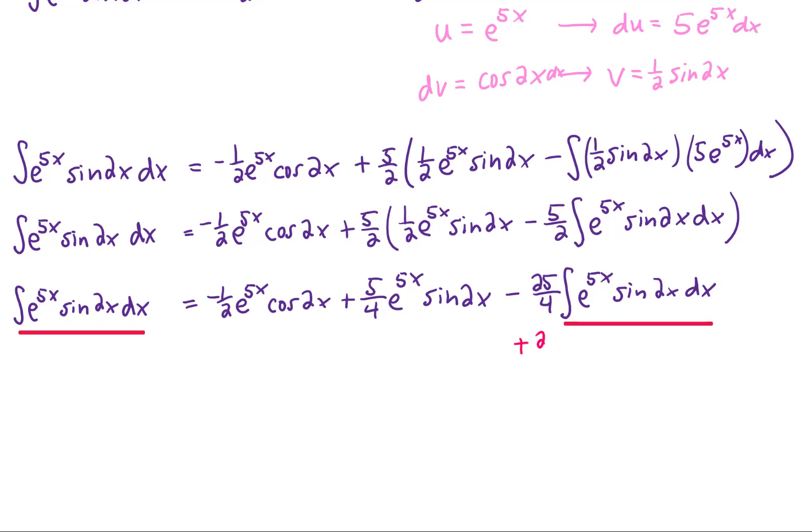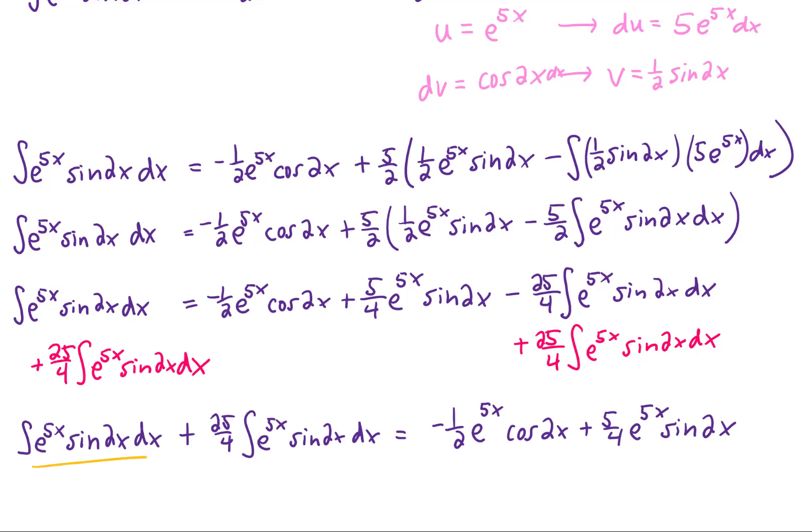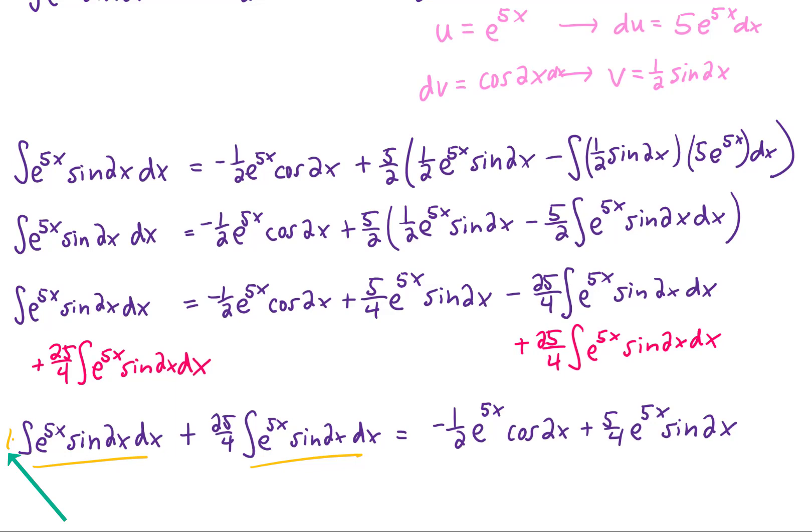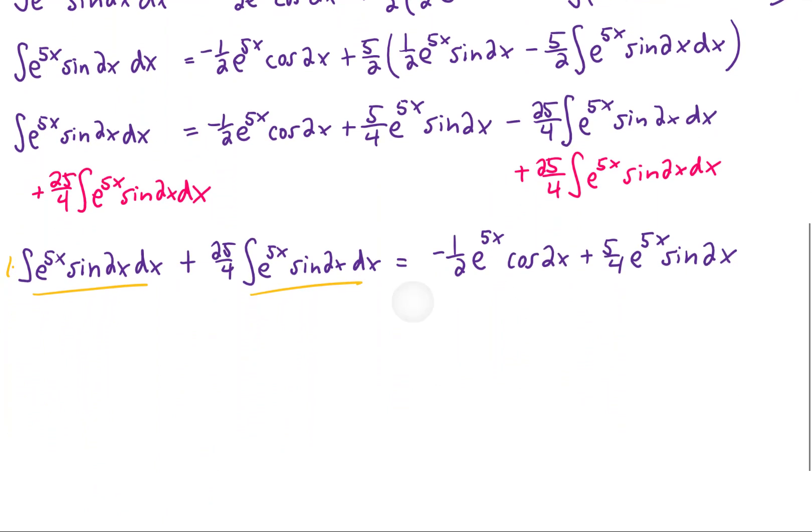We can add this term to both sides of this equation. That gives us the following line. Now, you'll notice that on the left side of this equation, like I said before, you have two like terms. You have 1 times the original integral plus 25 fourths times the original integral. Adding together 1 times something plus 25 fourths times something is going to give us 29 fourths times that thing.